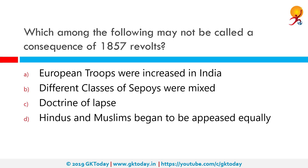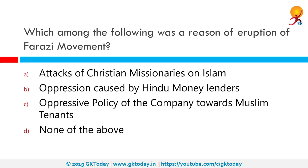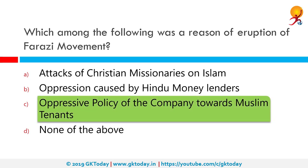Which among the following may not be called a consequence of the 1857 revolt? The correct answer is Hindus and Muslims began to be appeased equally — this is not true. The Indian rebellion of 1857 had diverse political, economic, military, religious and social causes. The spark that led to a mutiny in several companies was the issue with new gunpowder cartridges for the Enfield rifle in February 1857, which hurt the religious sentiments of both Hindus and Muslims.